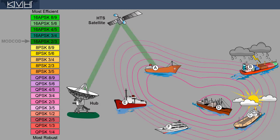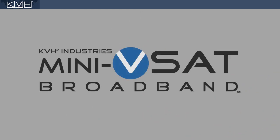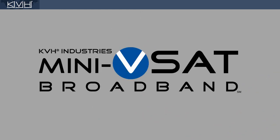As you can see, the hub is dynamically optimizing the link for every vessel on the network, maximizing bandwidth efficiency. This concludes our brief overview of adaptive coding and modulation, a key advantage of the MiniVSAT Broadband HTS network.